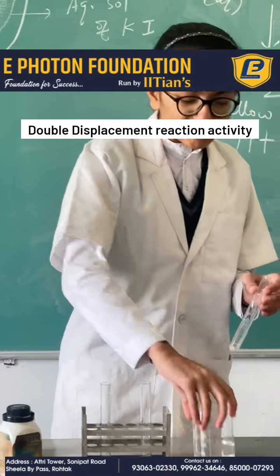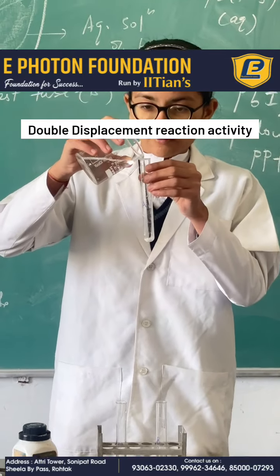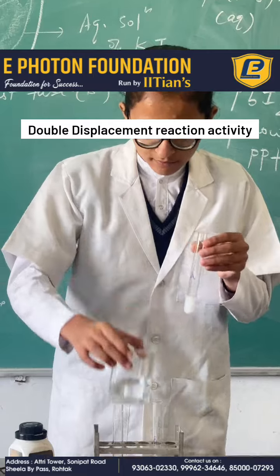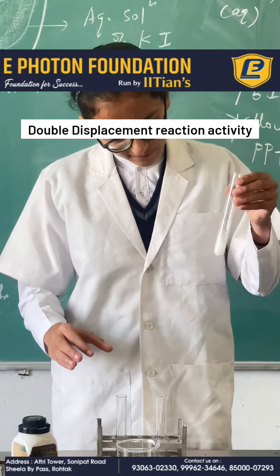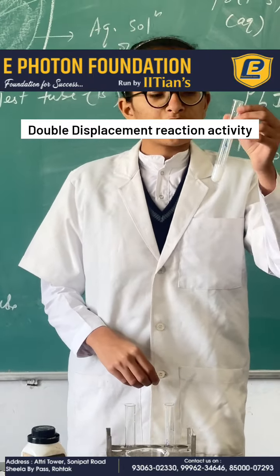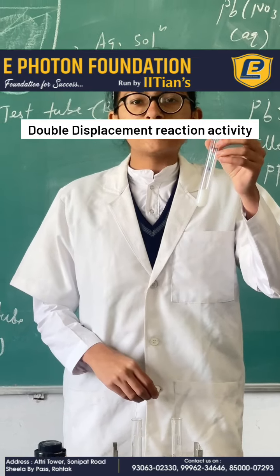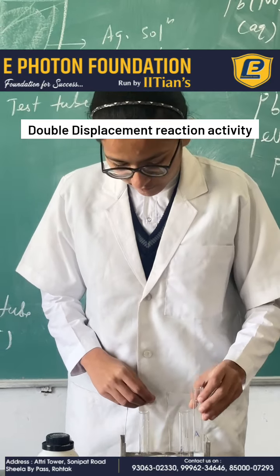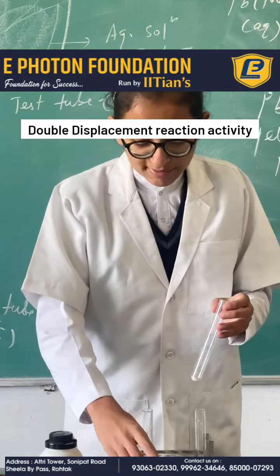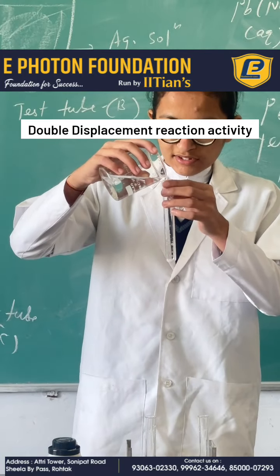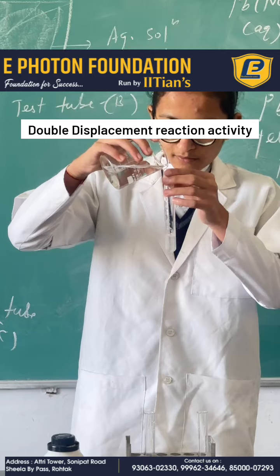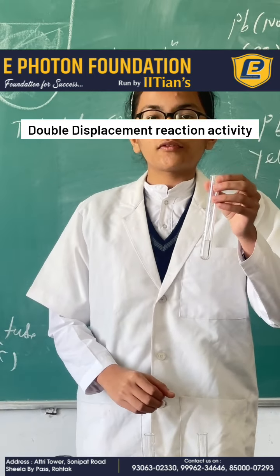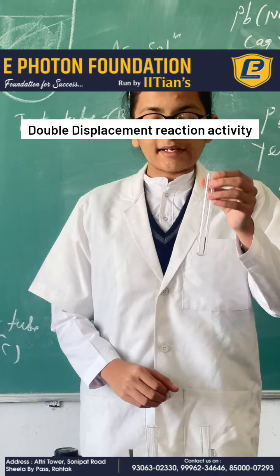Now add some amount of water in test tube A and mix it. We observe that the color of the aqueous lead nitrate solution is white. Now add some amount of water in potassium iodide, and we observe that the color of potassium iodide solution is colorless.